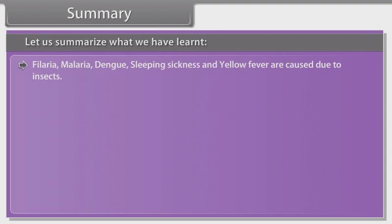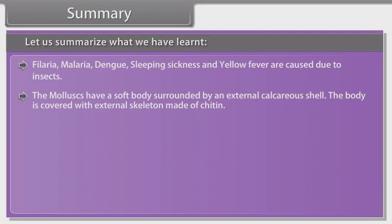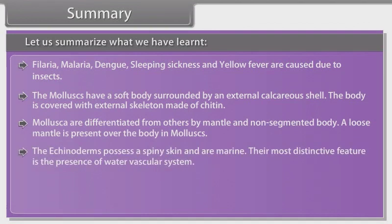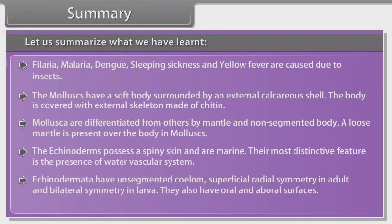Molluscs have a soft body surrounded by an external calcareous shell. Mollusca are differentiated from others by the presence of a mantle and non-segmented body. The echinoderms possess spiny skin and are marine. Their most distinctive feature is the water vascular system. Echinodermata have unsegmented coelomic body, superficial radial symmetry in adults, bilateral symmetry in larvae, and oral and aboral surfaces.